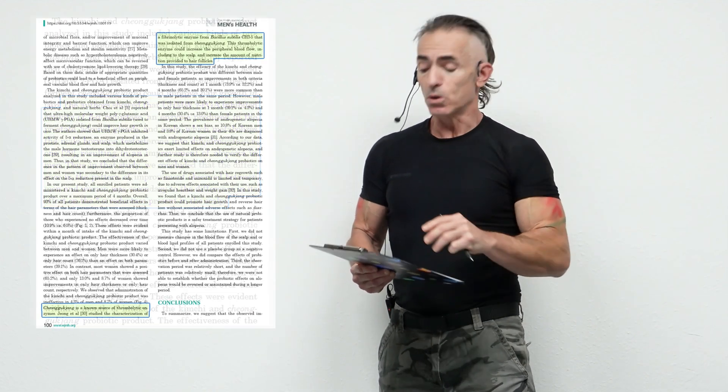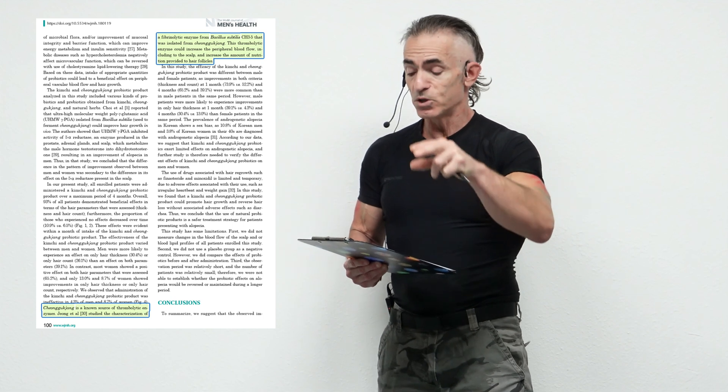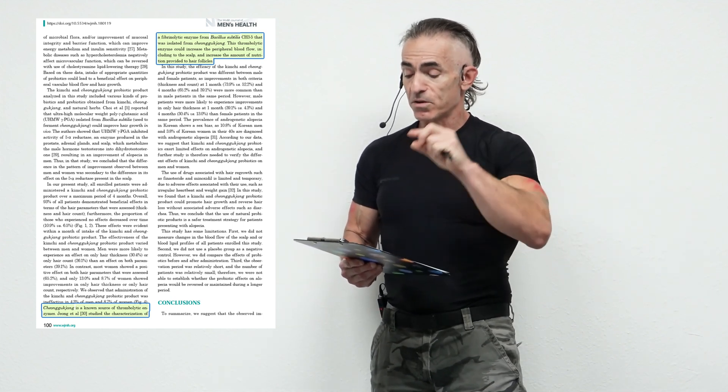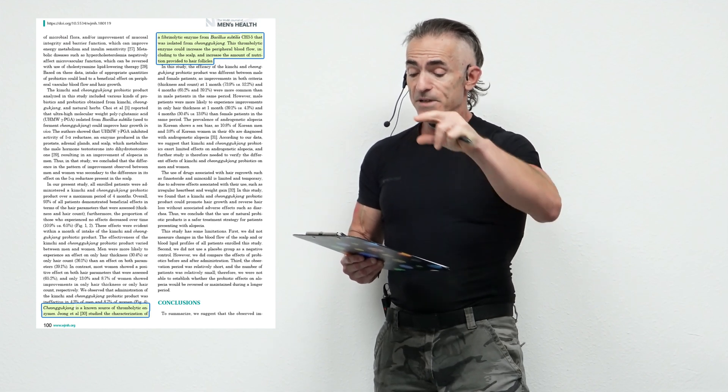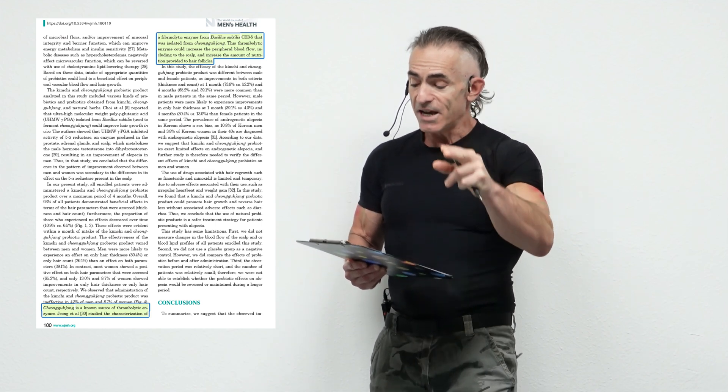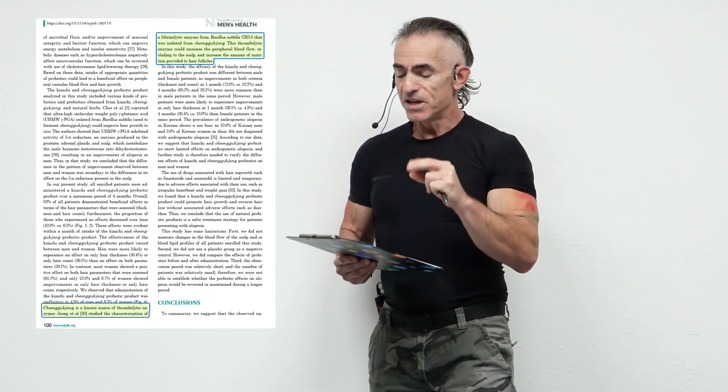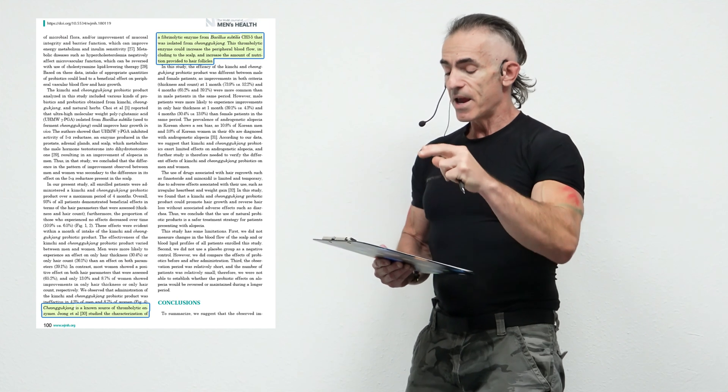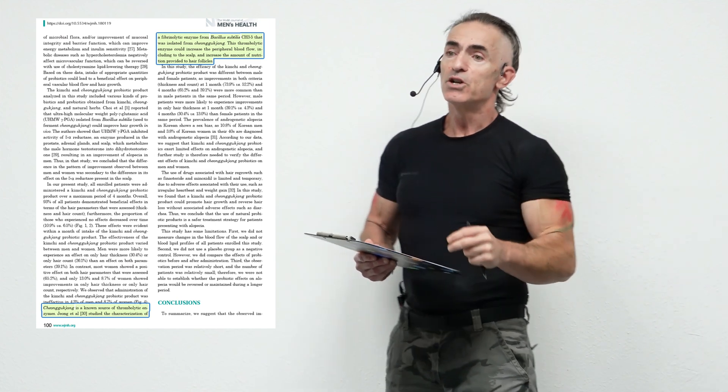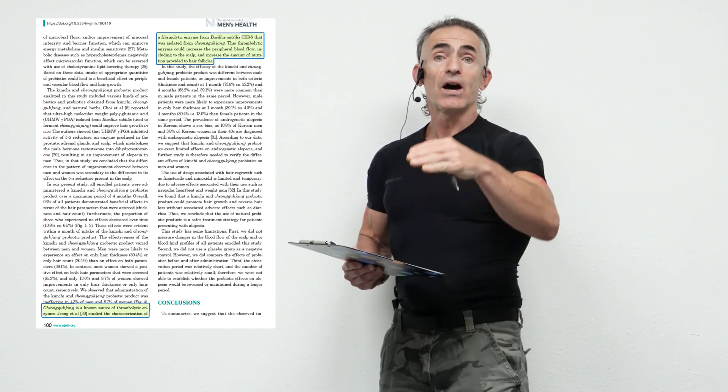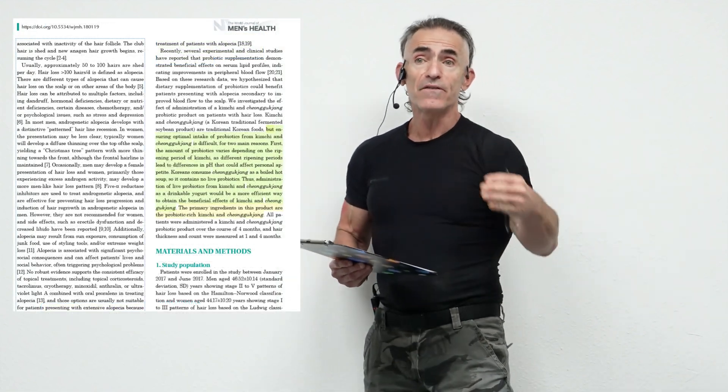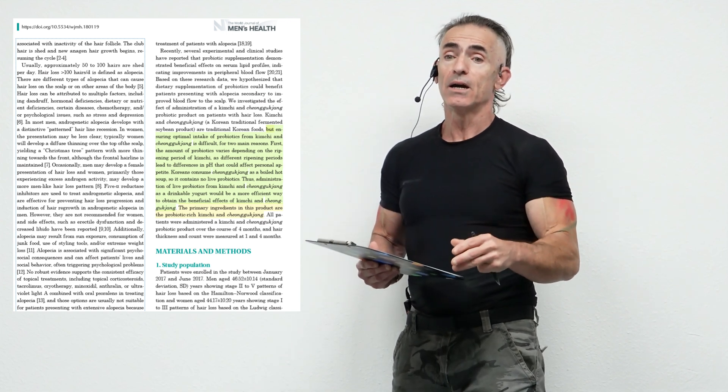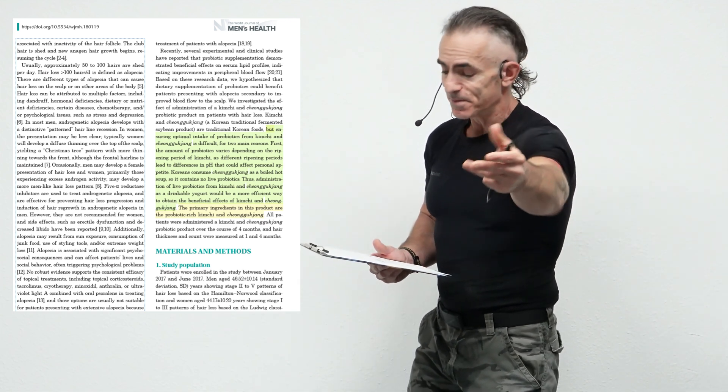Another highlight. Shunggu Zhang is known as a thrombolytic enzyme, is known as a source of thrombolytic enzymes. Study that the characterization of the fibrinolytic enzyme from bacillus subtilis that was isolated from Shunggu Zhang. This thrombolytic enzyme could increase the peripheral blood flow, including to the scalp, and increase the amount of nutrition provided to the hair follicles. So there you have a 5-alpha reductase effect and a thrombolytic effect between the combination of these two powerful probiotic powerhouses or masterpieces.